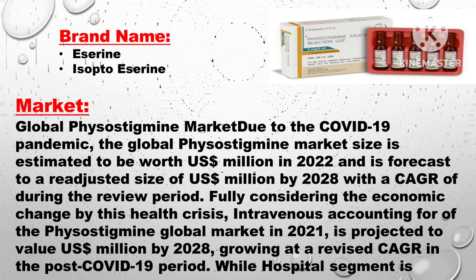Brand names include Eserine and Isopto-Eserine. Regarding the global Physostigmine market: due to the COVID-19 pandemic, the global market size is estimated in millions of US dollars for 2022 and is forecast to be readjusted by 2028 with a CAGR during the review period. The intravenous segment is projected to grow to a revised value by 2028, while the hospital segment is also projected to grow throughout the forecast period.